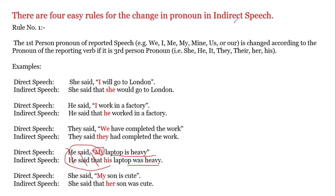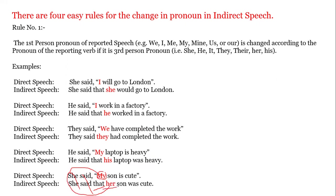'She said, my son is cute.' Indirect speech: 'She said that her son was cute.' 'My' — first person possessive — becomes 'her' because the reporting verb subject is 'she'. Simple present 'is' becomes simple past 'was.'